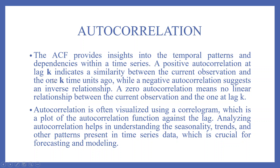A positive autocorrelation at lag k indicates a similarity between the current observation and the one k time units ago, while a negative autocorrelation suggests an inverse relationship. A zero autocorrelation means no linear relationship between the current observation and the one at lag k. Autocorrelation is often visualized using a correlogram, which is the plot of the autocorrelation function against the lag.